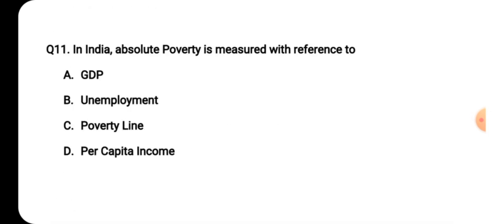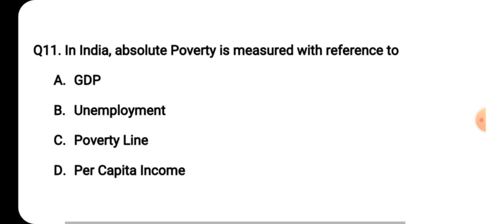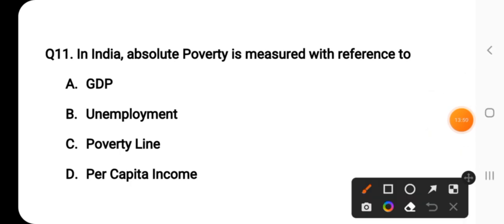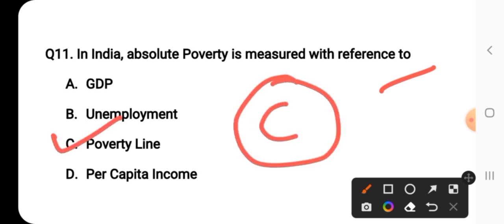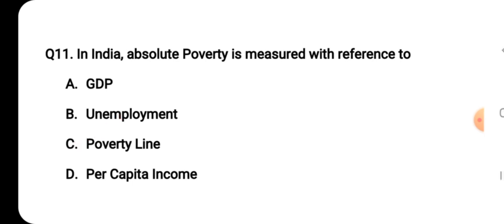Question number eleven: in India, absolute poverty is measured with reference to what? It is measured with reference to the poverty line. So C is the right answer for question number eleven.